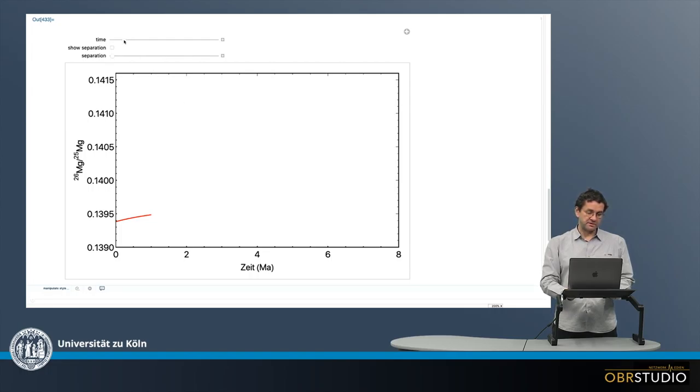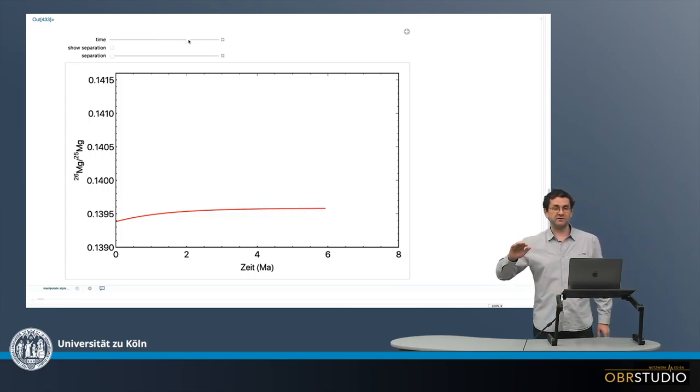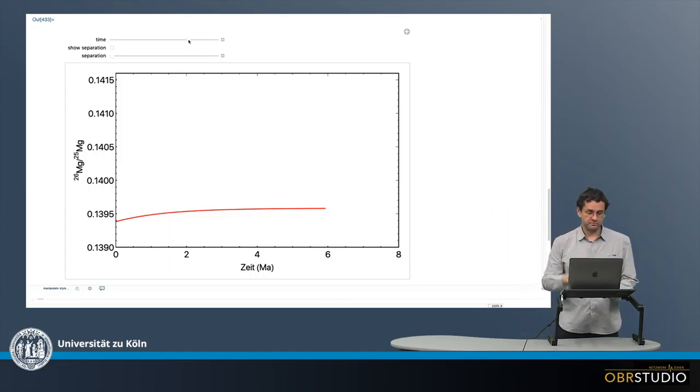I can change the time here with this slider and increase the time, and then I see how this reservoir evolves. This reservoir is the CI chondrites. You can see how they increase over time in their radiogenic composition.